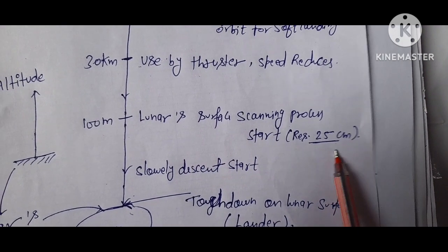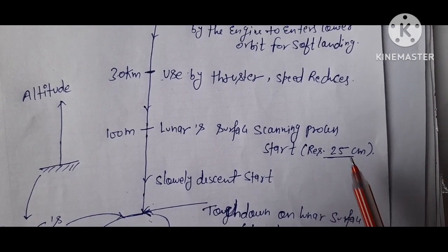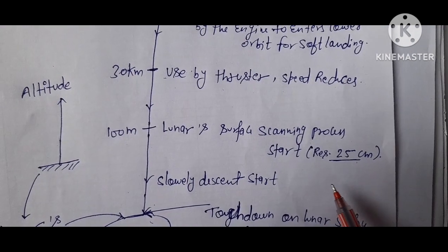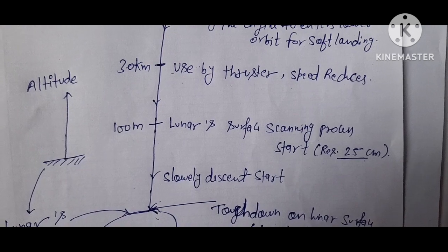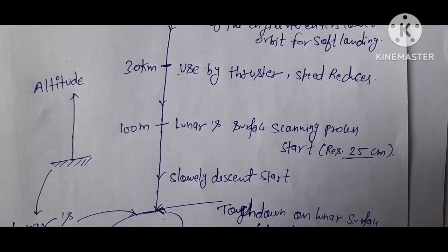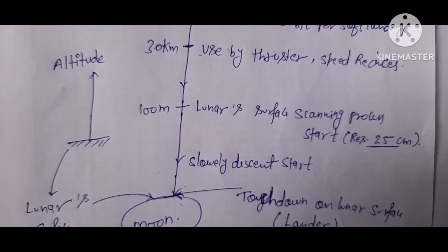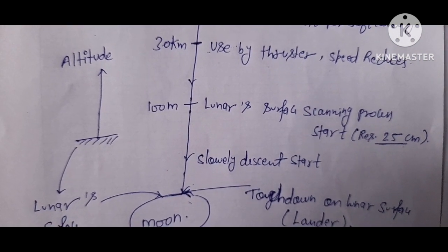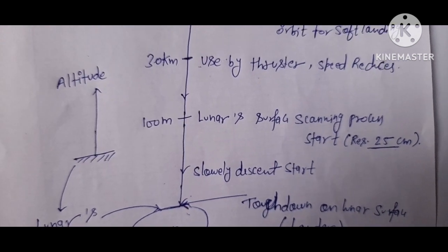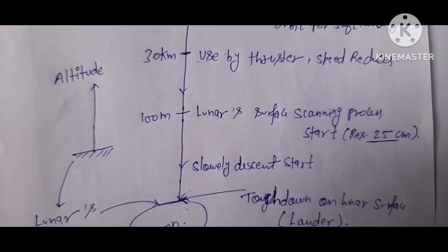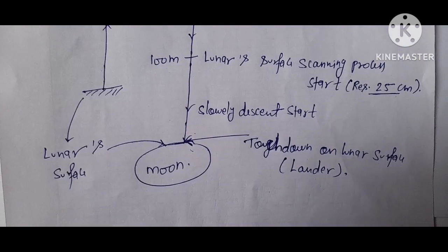The Chandrayaan-2 orbiter already took pictures and mapped the lunar surface. From 100 km, the lunar surface is scanned completely to identify obstacles, craters, and find a better place for landing the lander.